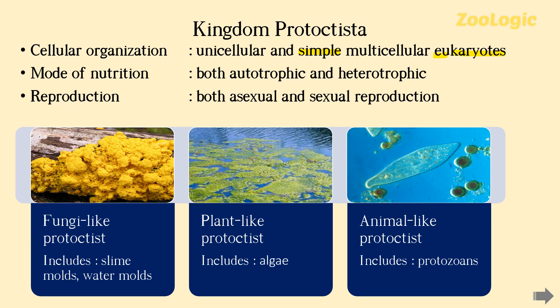Kingdom Protoctista is categorized into three further groups. First are fungi-like protoctists — organisms with characteristics closely related to fungi — which include slime molds and water molds. Second are plant-like protoctists, which include algae. Third are animal-like protoctists, which include protozoans that are always unicellular.